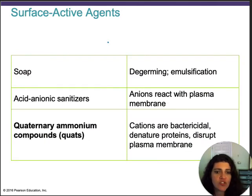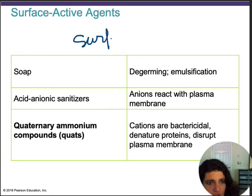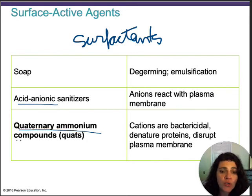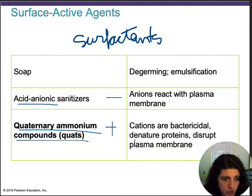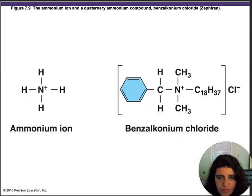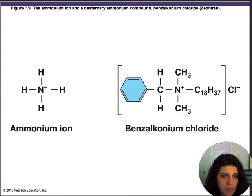Surface-active agents, also called surfactants, include anionic sanitizers that react with the plasma membrane and quaternary ammonium compounds, which have a positive charge. Anionic sanitizers have a negative charge. The positive-charge quaternary ammonium compounds denature proteins. The commercial quaternary ammonium compound is called Zephiran, which contains benzalkonium chloride — it's used for skin and mucous membrane disinfection before surgery and for hospital utensils.